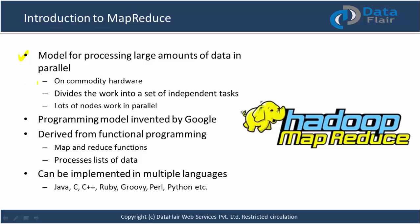MapReduce works very well even on commodity hardware. It divides the work into a set of independent tasks. If you have a very big problem, divide that problem into sub-problems and solve them independently — that's the fundamental idea of MapReduce. In a Hadoop cluster, lots of nodes work in parallel to process the data.